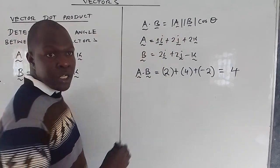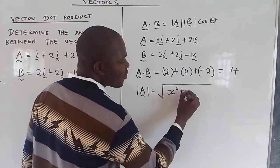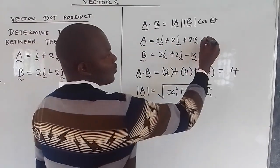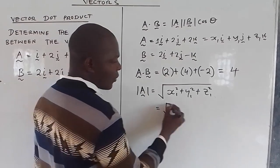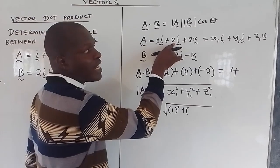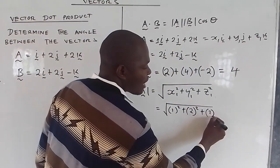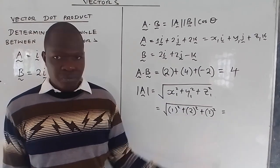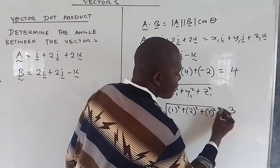So a dot b = 2 + 4 - 2 = 4. Then we want the magnitude of a. The magnitude of vector a is given by the Pythagorean theorem: the square root of x squared plus y squared plus z squared. So substituting the values of vector a, we get the square root of 1 squared plus 2 squared plus 2 squared. The answer is the square root of 9, which is 3.